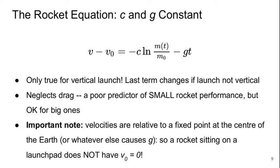So a rocket sitting on a launch pad does not have v₀ equals zero. It has v₀ equal to the radius of the Earth times the angular velocity of the Earth related to some kind of trigonometric function related to whatever latitude you're at.